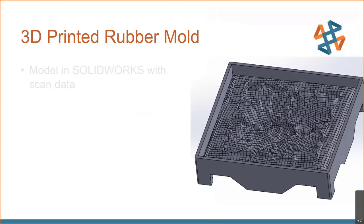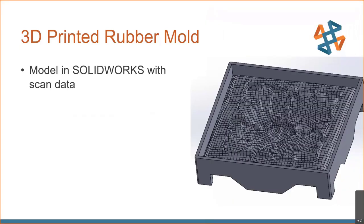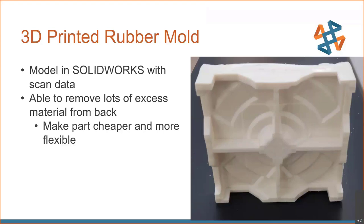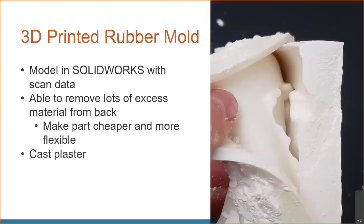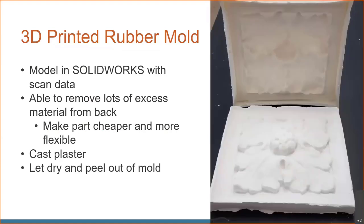To make that rubber mold, we took the scan data, brought it into SolidWorks, built a part around it, and did a subtraction to subtract out the captured surface data. We then hollowed out the back to reduce material use, print time, and improve flexibility. From there, we took our 3D printed rubber mold, mixed up some plaster into it, let it cure, and were able to peel it out — a plaster replica directly from a 3D printed rubber mold that is fully reusable for multiple casts.